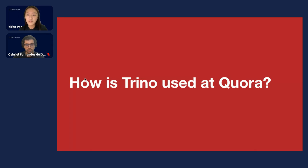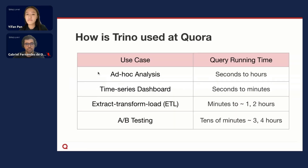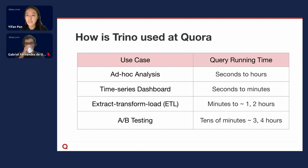Let's talk about how we use Trino at Quora. Trino has four main use cases here. First, there are ad hoc queries. Trino is used for running ad hoc analysis at Quora, which varies greatly in complexity. Depending on what users want to achieve, these queries can take anywhere from a few seconds to several hours to execute.